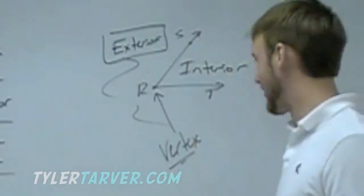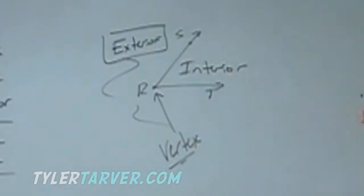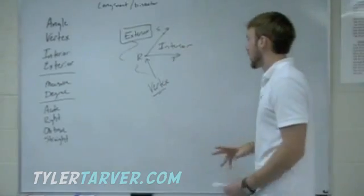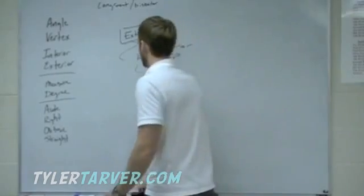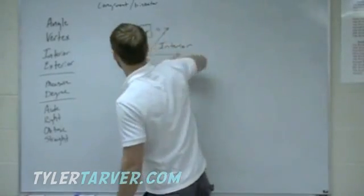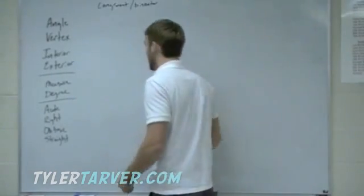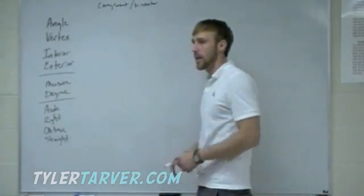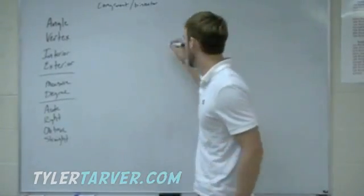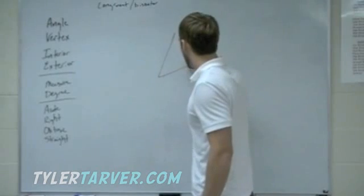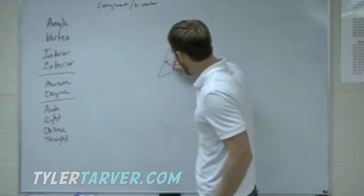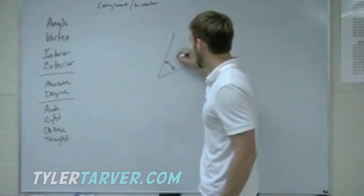That's a vertex — the point where the two rays meet. Next thing you need to know about angles is called measure. Most of y'all have heard the word measure before — it's talking about how big or small something is, how far it's open.